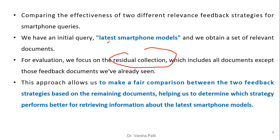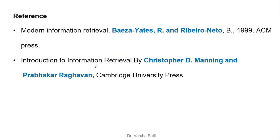This helps us determine which strategy performs better for retrieving information about the latest smartphone models. Once you understand all three methods in detail, you can make the comparison — precision-recall alone is not sufficient here, but the residual collection is important to compare the performance of different user relevance feedback strategies.